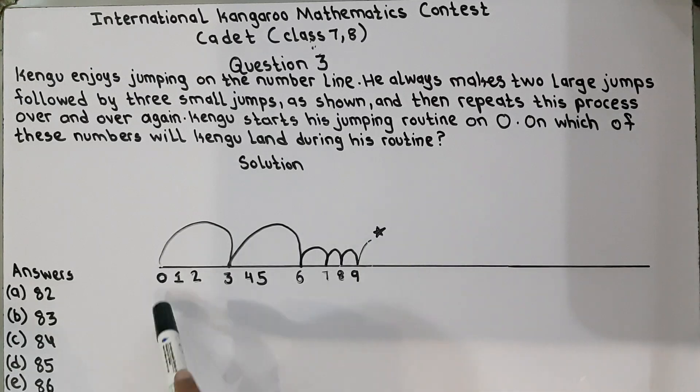Kangaroo starts his jumping routine on zero. He starts his jumping routine from here. So they are asking on which of these numbers the kangaroo will land after completing his routine several times. So we have to find it out.